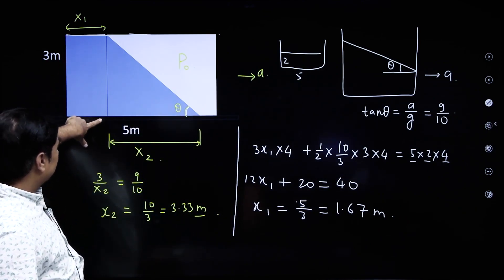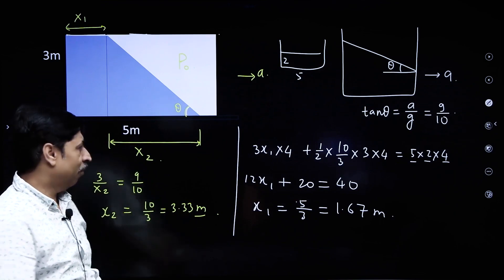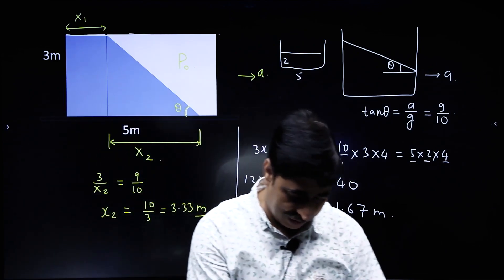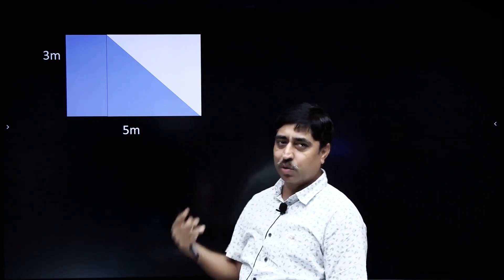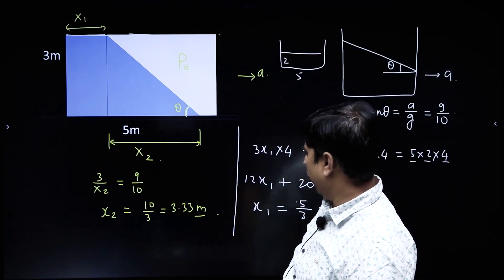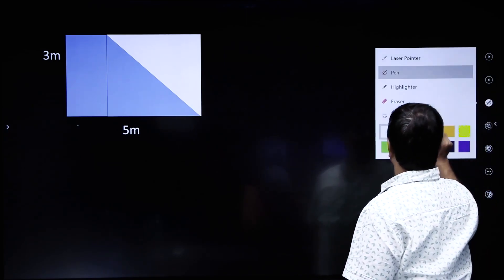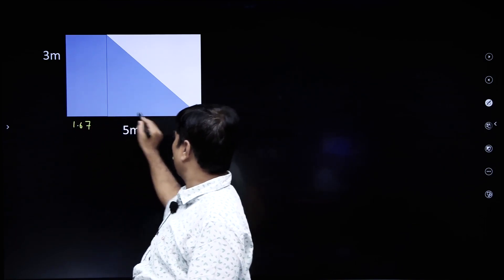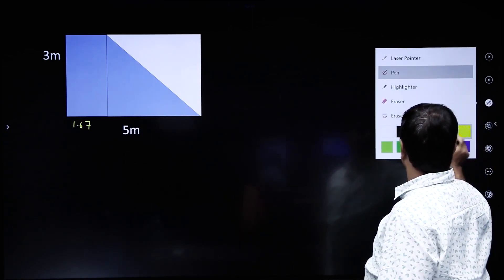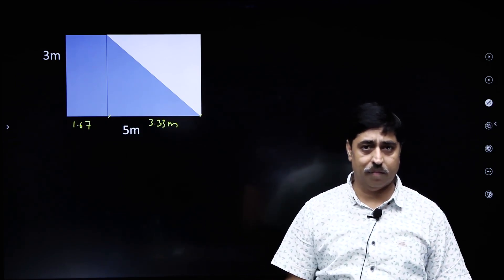So x1 is 1.67 meter and x2 is 3.33 meter. In fact, if you add these two, it sums up to exactly 5 meter. So the foot of this liquid triangle falls exactly at the far wall of the tank. This is what the actual diagram situation will look like. This is 1.67 meter, this is 1.67 meter from here to here, and the whole triangular base is 3.33 meter — and the whole thing is 5 meter.